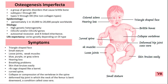Osteogenesis Imperfecta, also known as brittle bone disease, is a genetic disorder characterized by fragile bones that break easily, often with little or no apparent cause. The condition can vary widely in severity, with symptoms ranging from mild to severe.